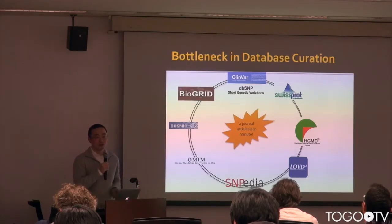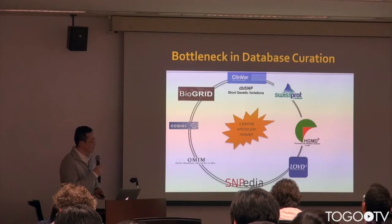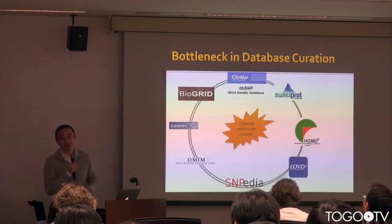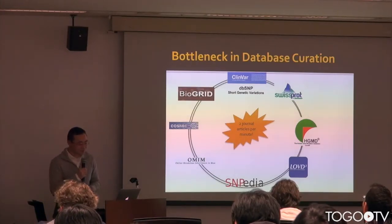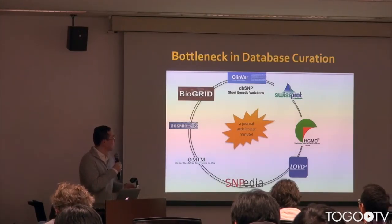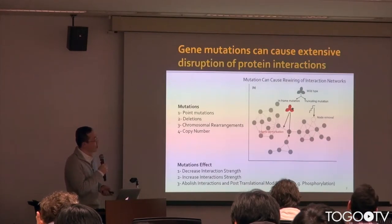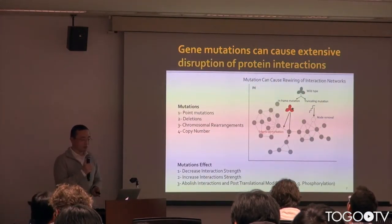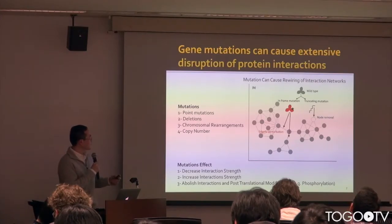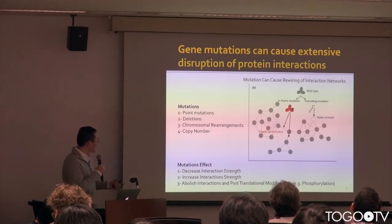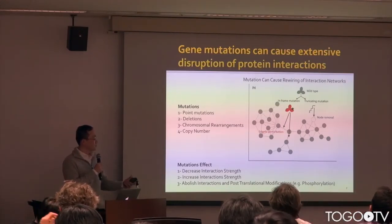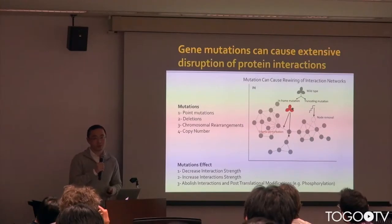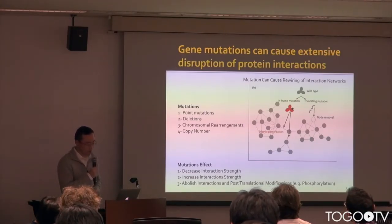If you compute that, it's about two journal articles every minute. I've already talked for about three minutes, so there are already six new papers, and some of them may be related to human genetic variants. The annotation of human genetic variants is important because genetic variants can alter human protein interactions — they can disrupt, or increase or decrease, interaction strength — and by doing that, they can change the function of a particular protein, which can cause or relate to diseases.